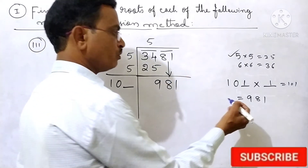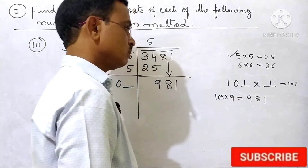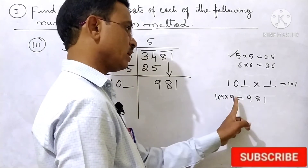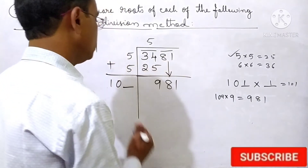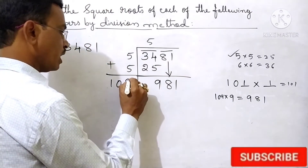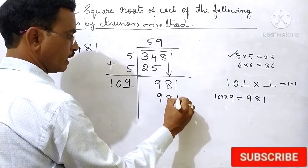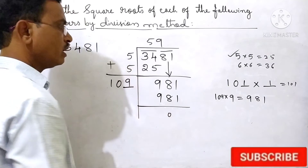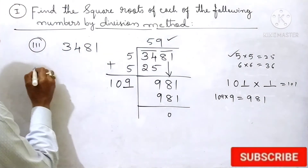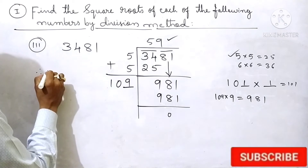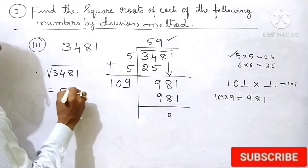So here what we should take: 109×9. 9×9=81, 9×1=9. That gives 981. Remainder is 0. Now the answer is 59. Therefore, the square root of 3481 is 59.